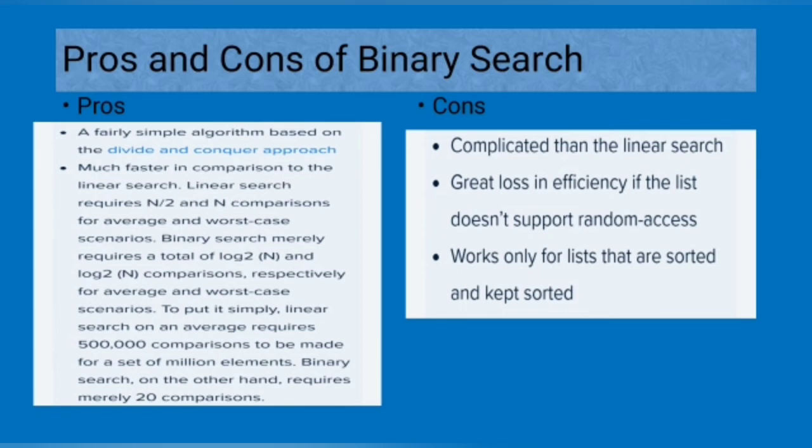The disadvantages of binary search: more complicated than linear search, great loss in efficiency if the list does not support random access, and works only for lists that are sorted and kept sorted.